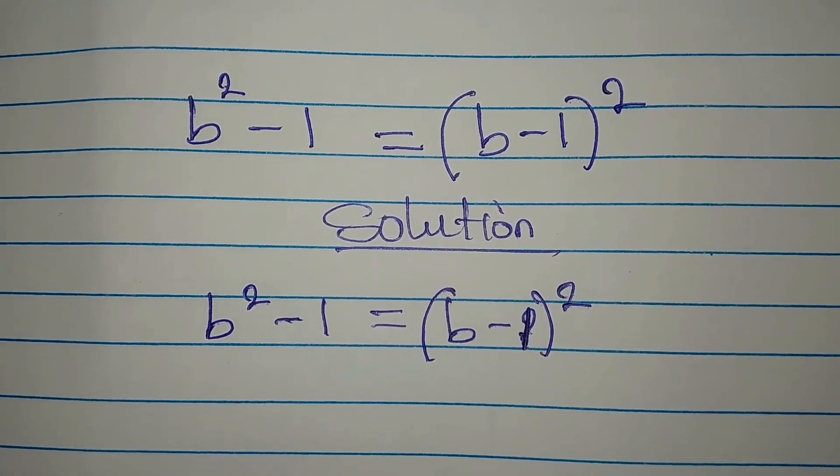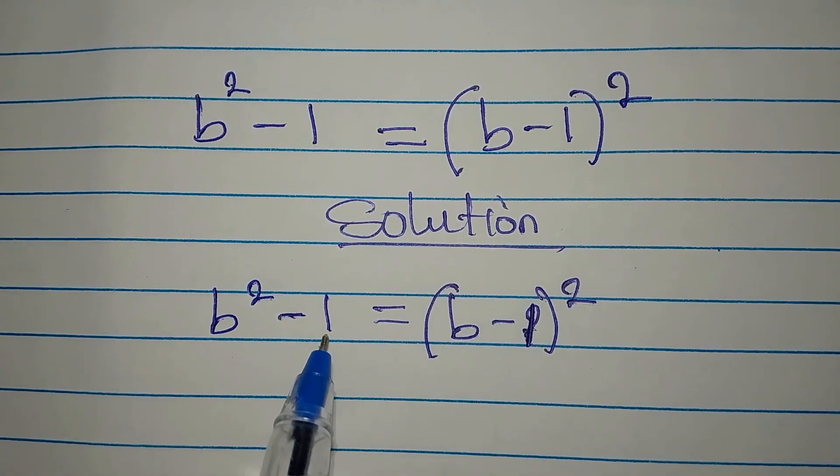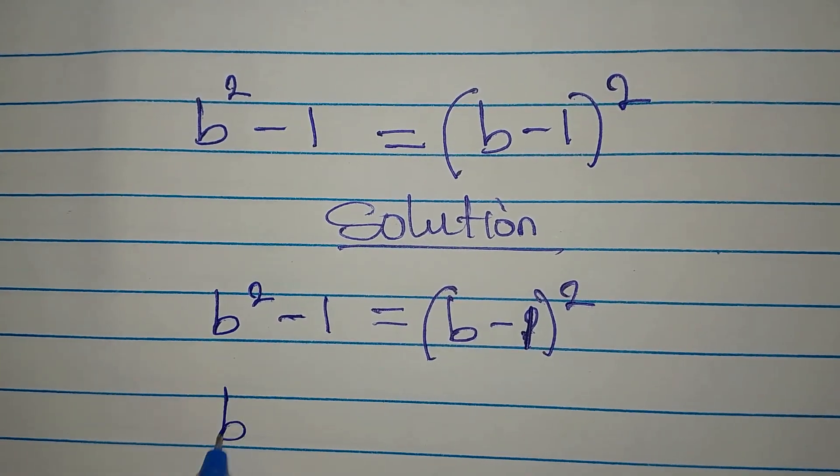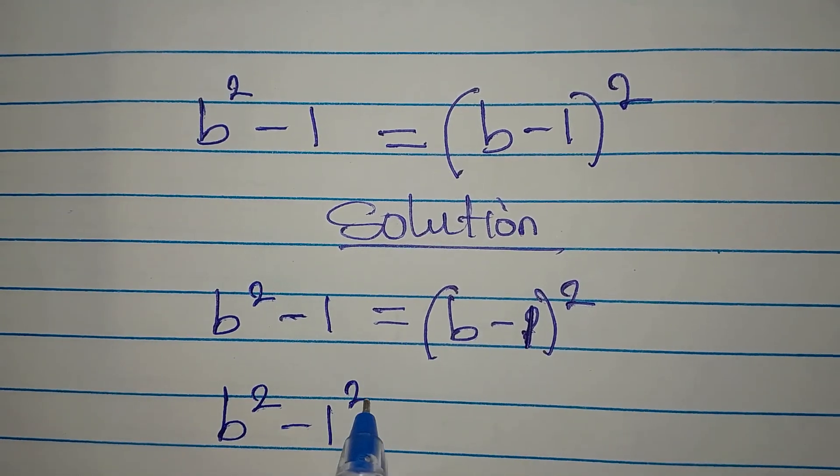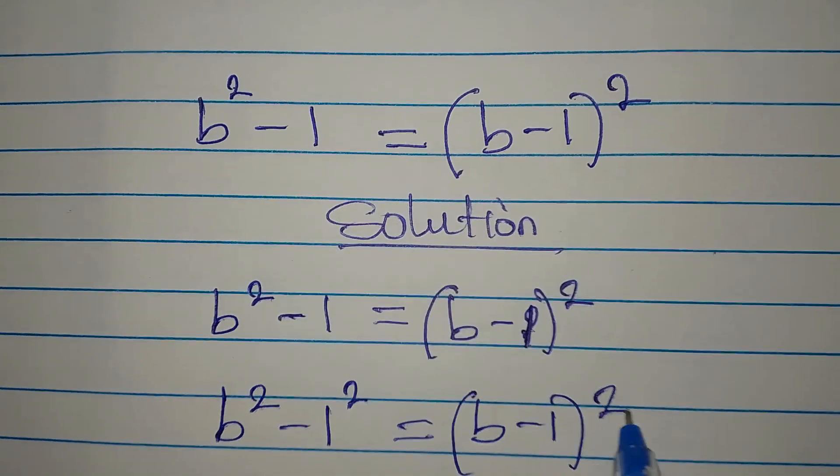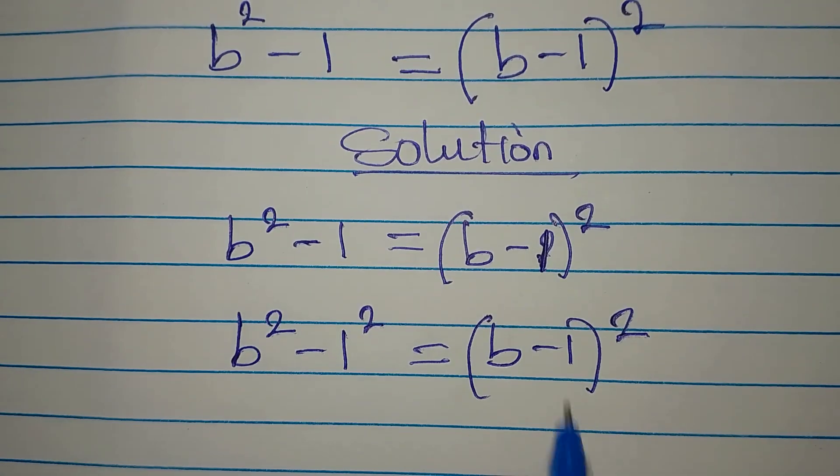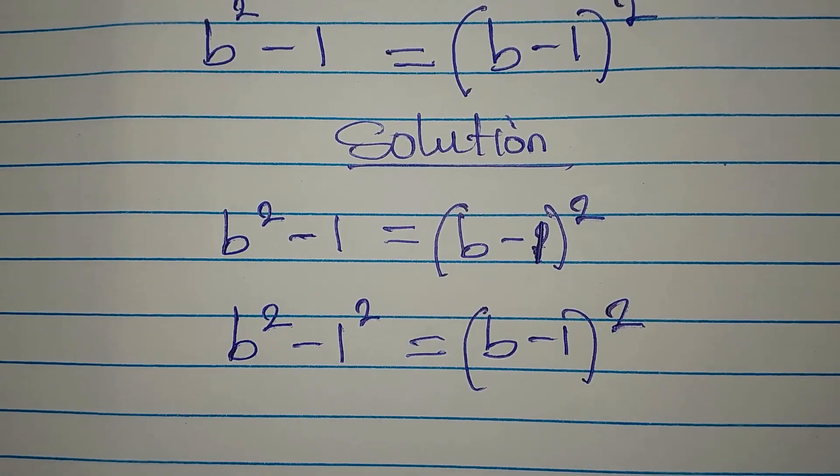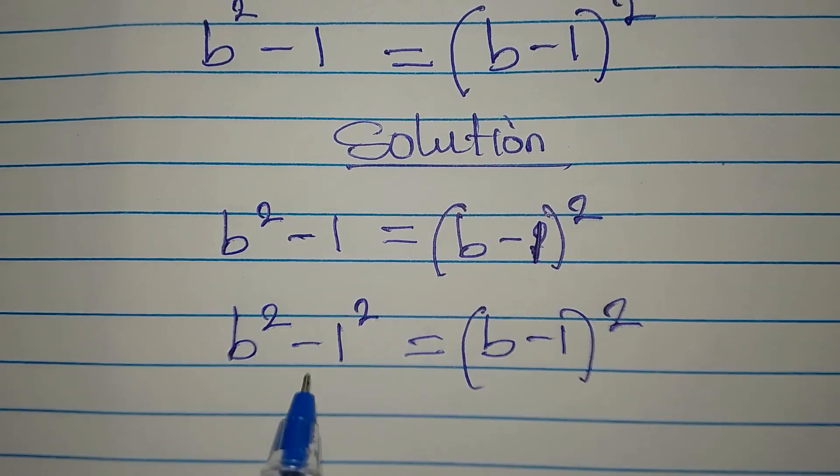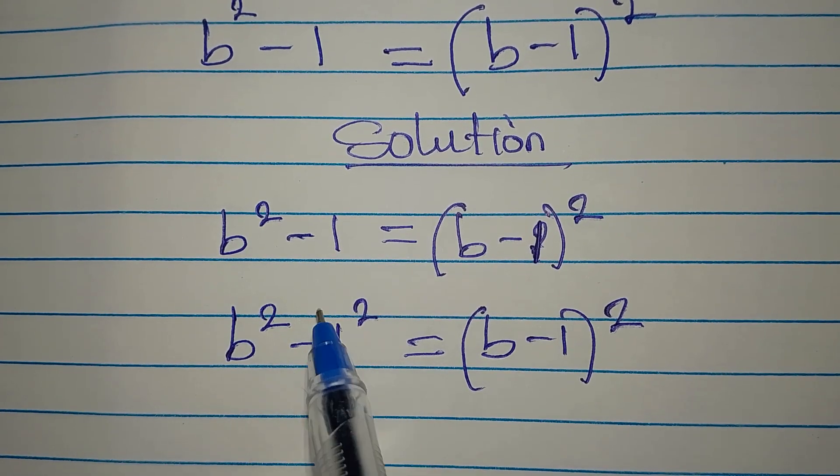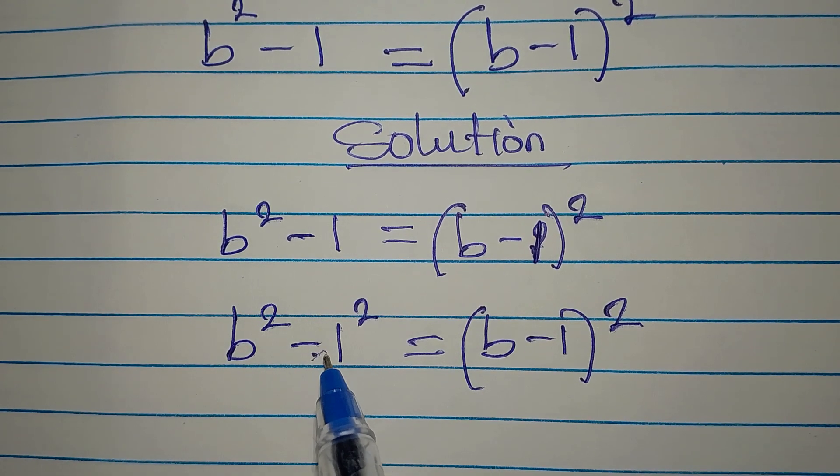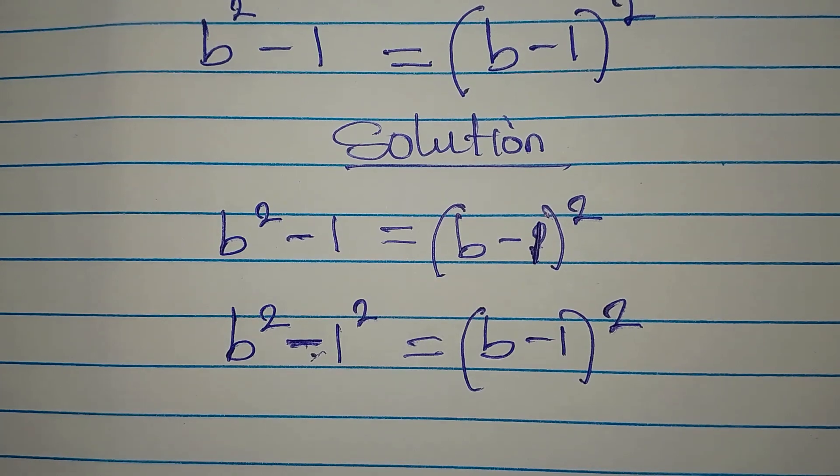Now to solve this, it's very simple. We can apply difference of two squares here because we have b squared minus 1 squared equals b minus 1, both squared. We can apply difference of two squares because one squared is the same as one. This negative is left out. If you put this in brackets and the negative is included, then this will end up giving you a positive value.